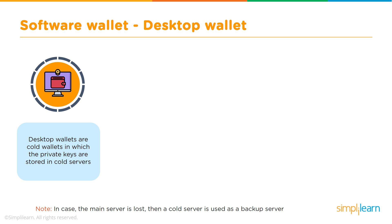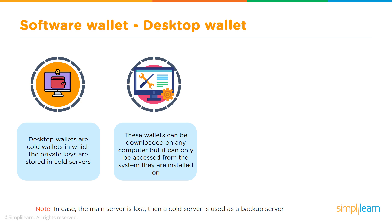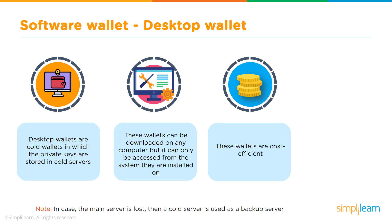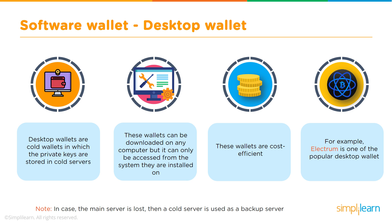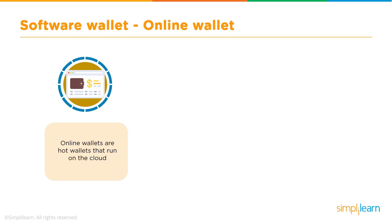If the main server is lost, the desktop is used as a backup server. These wallets can be downloaded on any computer but can only be accessed from the system they are installed on. You must ensure the machine is safe, has a backup, and is in a secure location. Desktop wallets are cost-efficient; one of the most popular examples is Electrum.